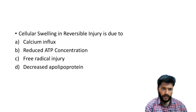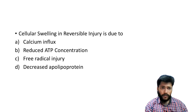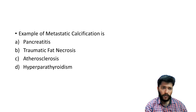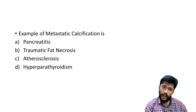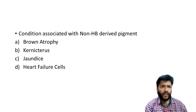Cellular swelling in reversible injury is due to reduced ATP concentration — the sodium-potassium pump does not work, leading to influx of water. Calcium influx occurs due to loss of the calcium exchanger pump, leading to activation of enzymes: lipases, phospholipases, and proteases, which lead to further damage. Not an example of metastatic calcification: hypoparathyroidism would be metastatic calcification. Pancreatitis with peripheral fat necrosis, traumatic fat necrosis in the breast, and atherosclerosis are all examples of dystrophic calcification.